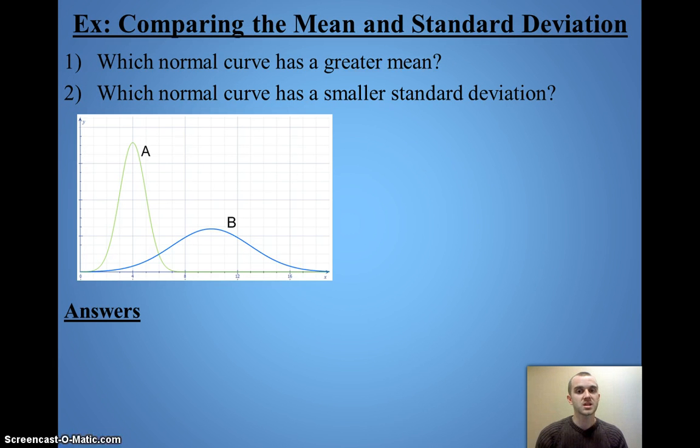Now, if I want to compare the mean and the standard deviation, when I look at the mean of two different graphs, I can look at the axis of symmetry, where is the center of my graph, and the one to the right, further right, is going to have a greater mean. In this case, that would be curve B.